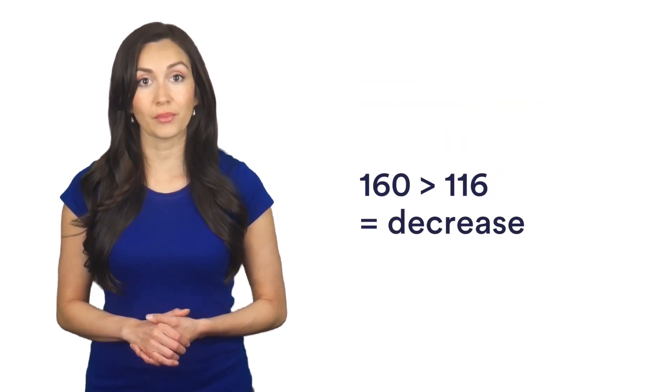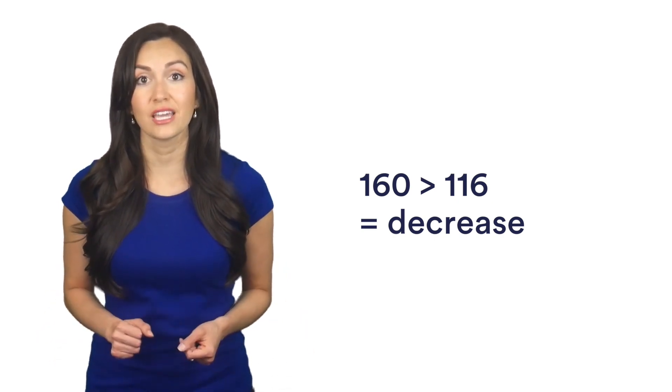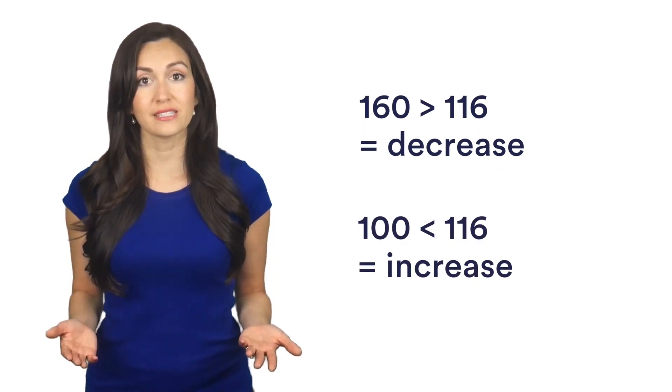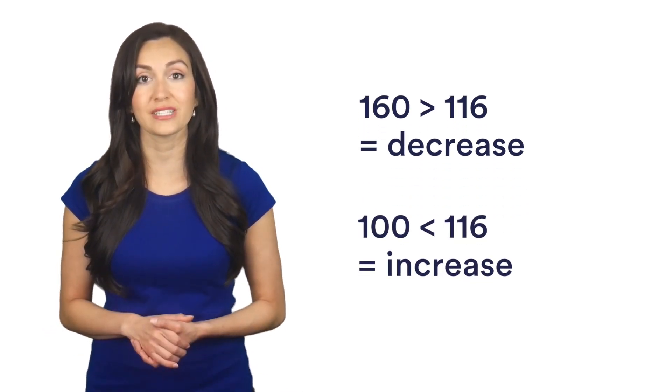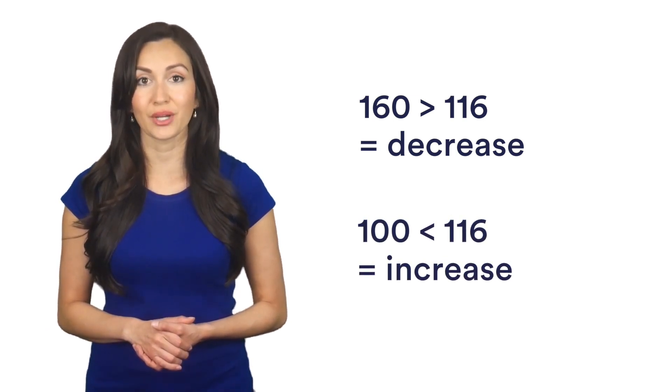We know this is a percentage decrease because our starting number was 160 and our change number was 116, which is a smaller number. If we started with 100 sweets and our change number was 116, it would be an increase because the second number is bigger.